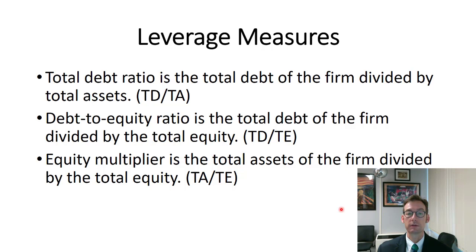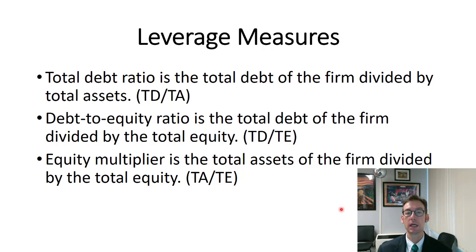There's another measure of leverage we discussed, and that is the debt to equity ratio, which is just total debt divided by total equity. That does contain your current liabilities, so you could also say it is total assets minus total equity divided by total equity. And finally, the equity multiplier, which is purely total assets divided by total equity.